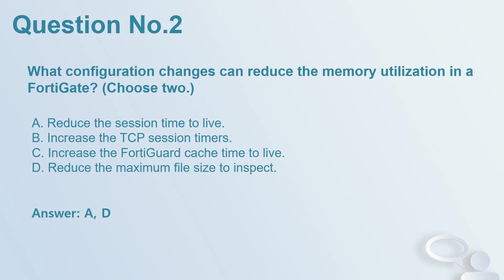Question number 2: What configuration changes can reduce the memory utilization in a FortiGate? Choose two. A. Reduce the session time to live. B. Increase the TCP session timers. C. Increase the FortiGate cache time to live. D. Reduce the maximum file size to inspect. Answer: A, D.